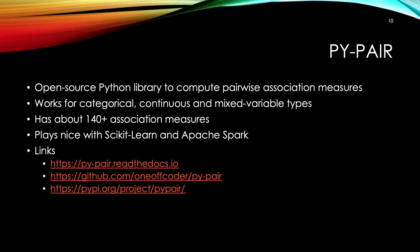You don't have to compute GKL by hand, although I would encourage you to, to see the mechanics of doing so. We've got a Python module called PyPair, which you may use to do the heavy lifting. PyPair is open source, and it can do more than compute GKL for two categorical variables. This module can compute association measures for categorical, continuous, and mixed variable types. There's about 140 plus different association measures baked in. The module plays nice with scikit-learn and Apache Spark. You can get the documentation from read the docs, the source code from GitHub, and install the package from PyPI.